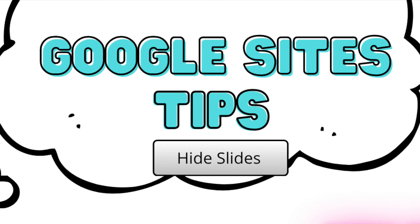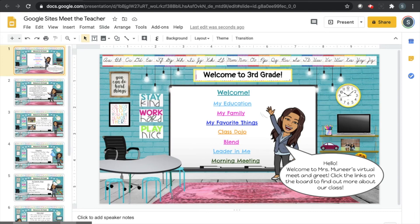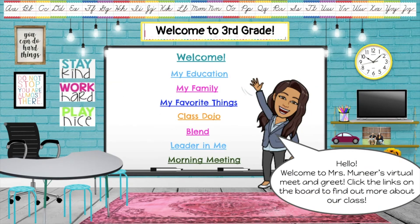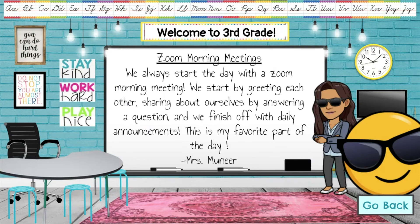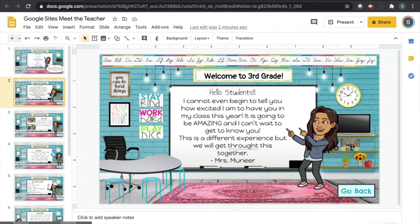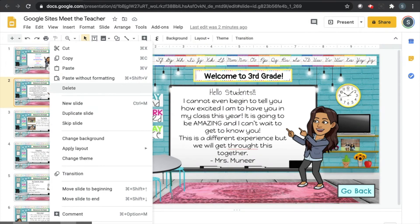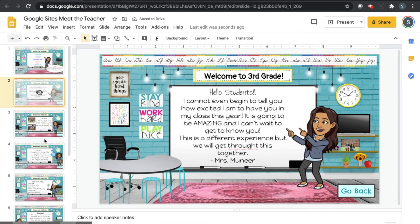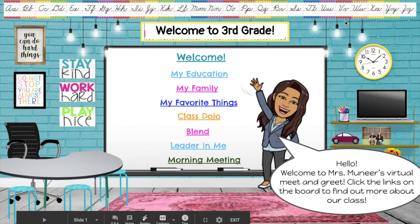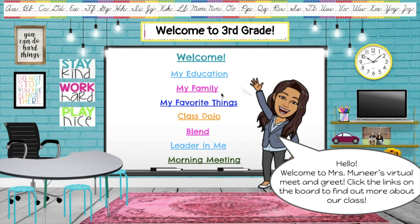All right, tip number four: how to hide slides. What I mean by hiding a slide is when you give this link to students — whether in presentation mode or make-a-copy mode — yes, they can click on your links, but they can also press an arrow on their keyboard and go to the next slide. So if you want to prevent kids from pressing any arrows on their keyboard and getting distracted, you want to hide your slides. What you're going to do is right-click the second slide and say 'skip slide.' What that does is it prevents them from pressing any keys and going to the next page. Do this for all of them. Now when you present it, they have to click on your links — they cannot press any keys on their keyboard and get distracted.